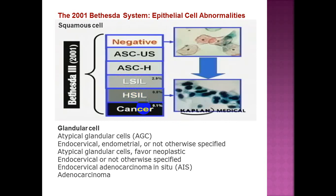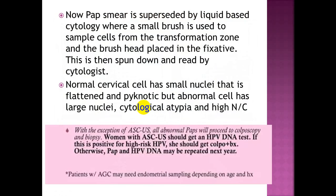Liquid-based cytology: a small brush is used to sample cells from the transformation zone. The brush head is placed in fixative, then spun down and read by a cytologist. A normal cervical cell has small, flat, and pyknotic nuclei, but an abnormal cell has large nuclei, cytological atypia, and a high nuclear-to-cytoplasmic ratio. With the exception of ASCUS, all abnormal Paps will proceed to colposcopy and biopsy. Women with ASCUS should get an HPV DNA test — if positive for high-risk HPV, she should get colposcopy.